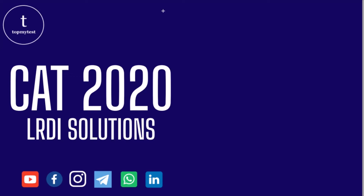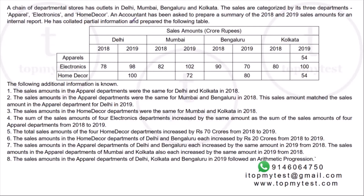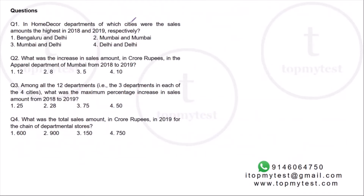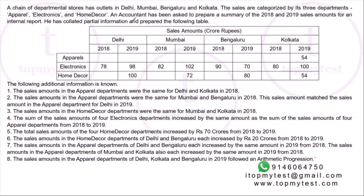Welcome to this session on CAT 2020 LRDI solutions. This is a calculation-based set from CAT 2020 slot 2, with four questions. You have to fill in the missing values with a lot of information given to you. A decent amount of calculation is required. I would suggest pausing this video and trying this entire set on your own. The questions and answer key are available in the description.